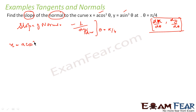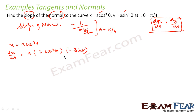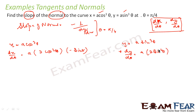Let's find both values: dx/dθ and dy/dθ. If x = a cos³θ, then dx/dθ = a · 3cos²θ · (−sinθ). Similarly, if y = a sin³θ, then dy/dθ = a · 3sin²θ · cosθ.